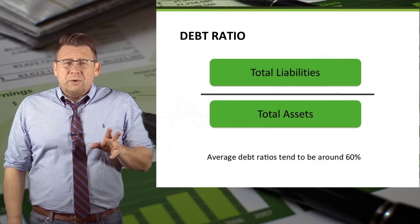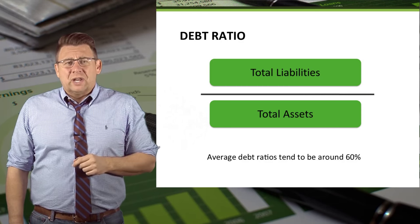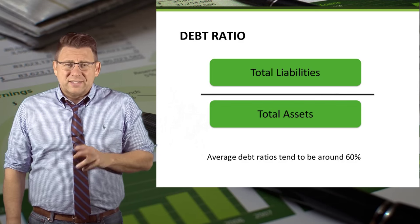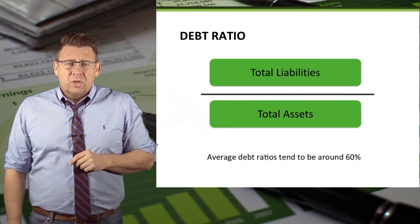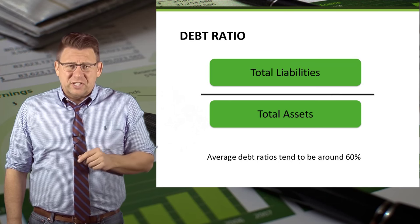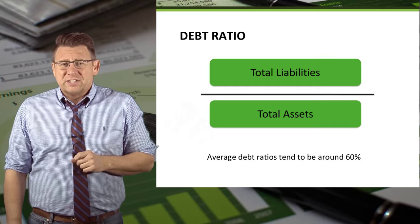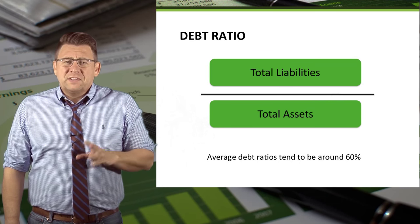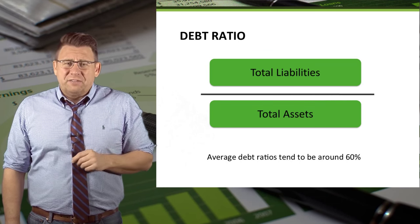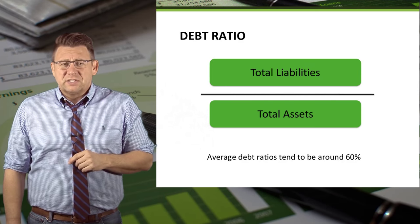The debt ratio is calculated as total liabilities divided by total assets. It tells us what percentage of assets are financed with debt. On average, most debt ratios are around 60%, as companies tend to finance more assets with debt than equity. This is mainly due to debt's tax advantages — interest expense is tax deductible for businesses.